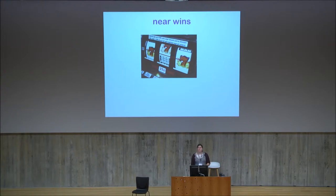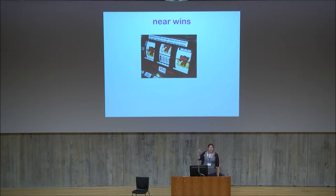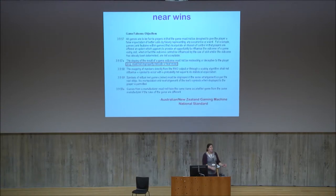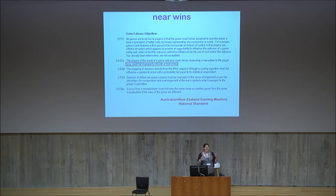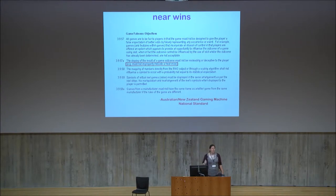We have quite a few studies now looking at near wins. Near wins are losses that are more similar to wins than other losses — losses that resemble wins. You can see this classic example where it looks like it's almost a win, but it's a loss. In the New Zealand legislation there's a sentence saying you're not allowed to have near wins. It says the display of the result of the game must not be misleading or deceptive — it must not properly indicate a near miss. The literature uses both terms: near misses or near wins — it's the same thing.